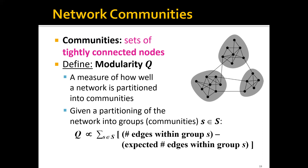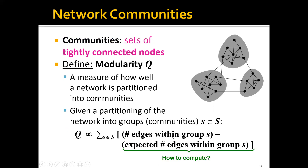Given a partitioning of the network into groups or communities — where we denote each community or group as S — we can compute the modularity of this partitioning as follows. For each group we compute the difference between the actual number of edges within the group and the expected number of edges within that group.